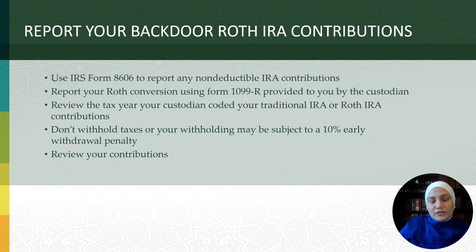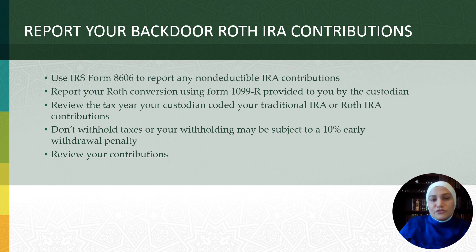A few more mistakes we see taxpayers make include not double-checking that IRA contributions made electronically in the current year for the previous year were coded correctly by the custodian. For example, you can make your 2023 IRA contribution all the way until April 15, 2024. However, if you do not tell the custodian to code it for the previous year, they will code it for 2024. If you do not catch this mistake, you will end up with what we consider an excess contribution. You can check for this in your account's transaction history.